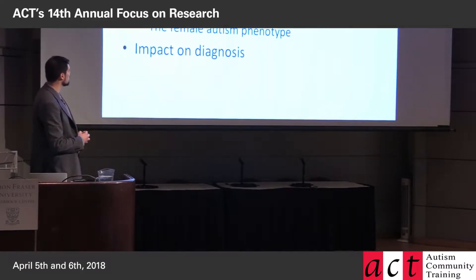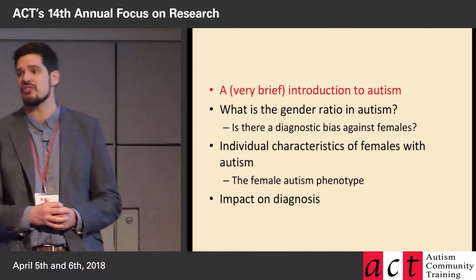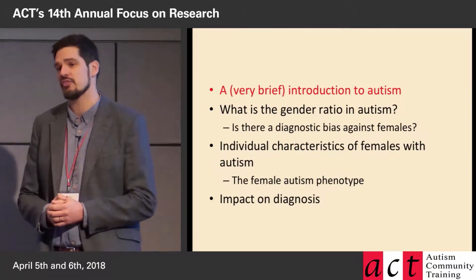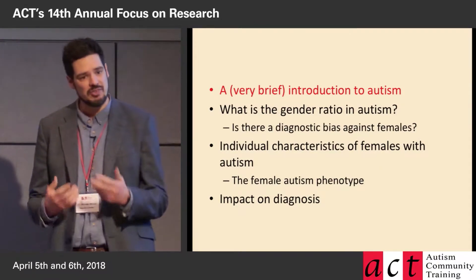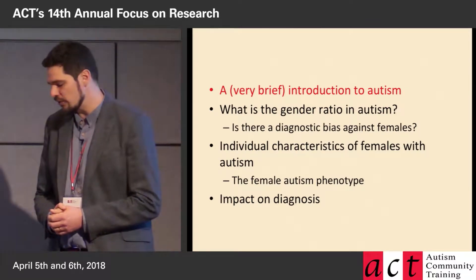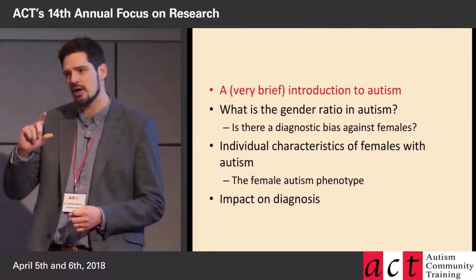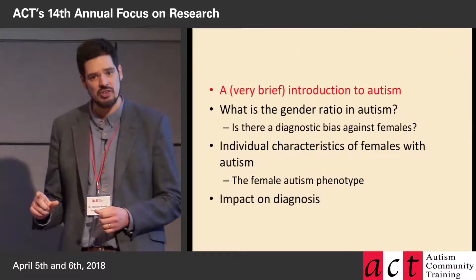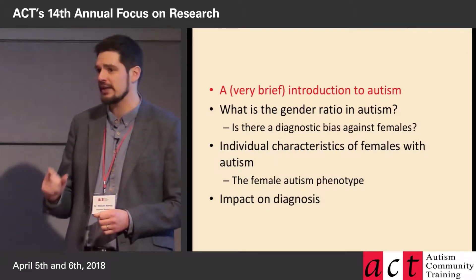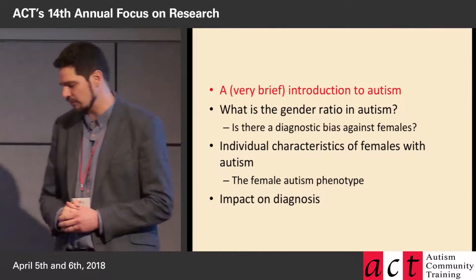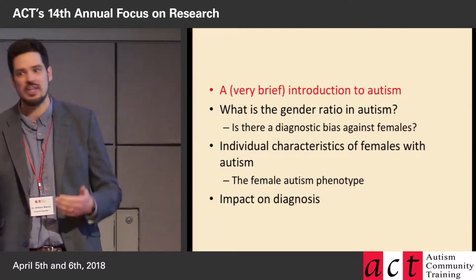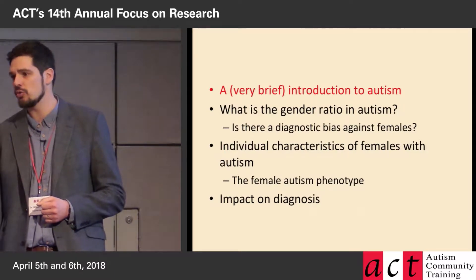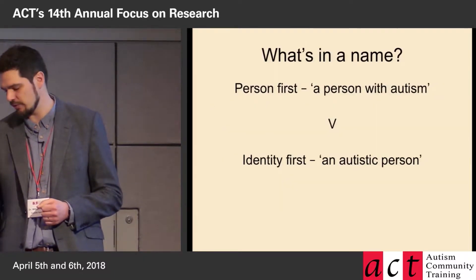I'm then going to talk about the gender ratio in autism, asking this question: is there a diagnostic bias against females? And then I'm going to think about what I call the female autism phenotype — female-specific characteristics of autism — with a particular emphasis on those that are empirically established, reflecting scientific studies, and which are important to improving recognition of autism. And then have a bit of a think about what's the impact of the female phenotype on diagnosis, and what steps we might begin to take to redress this problem in current autism practice.